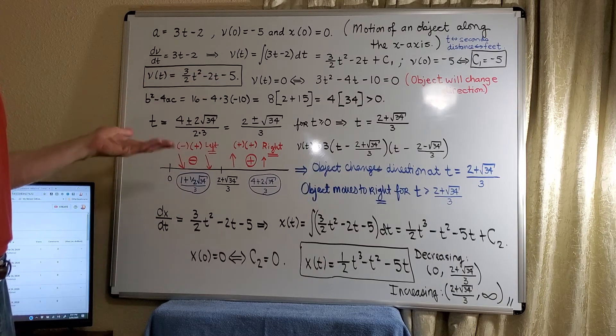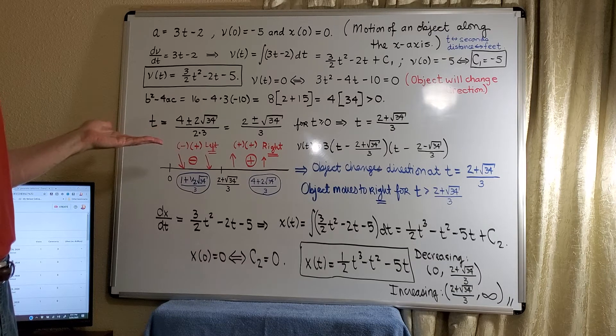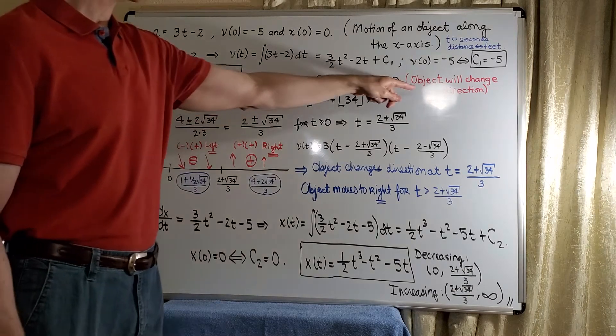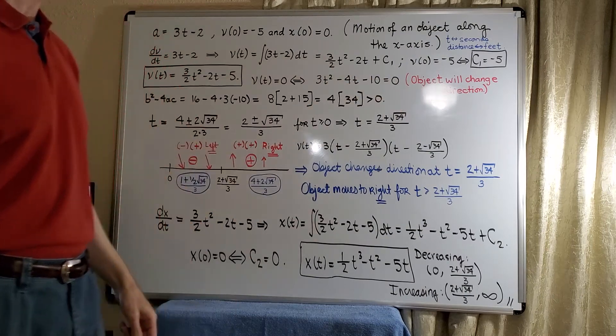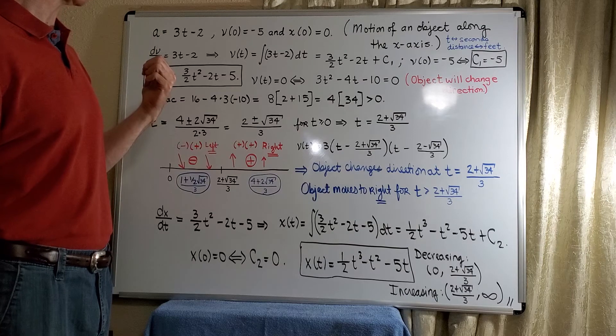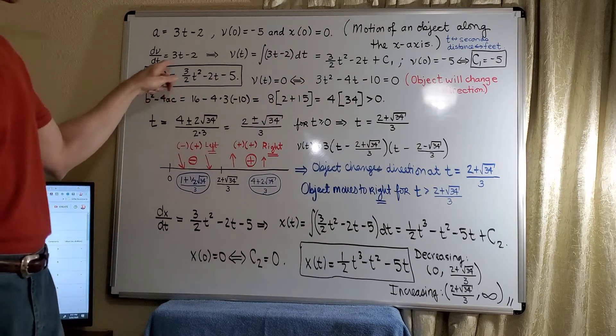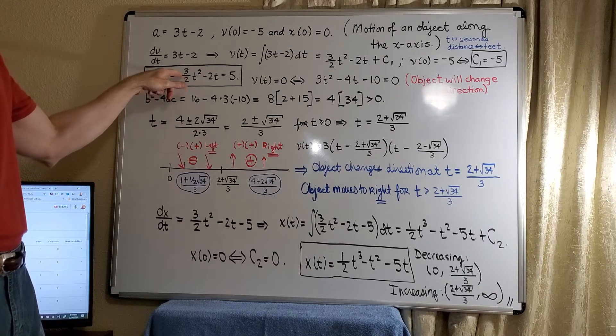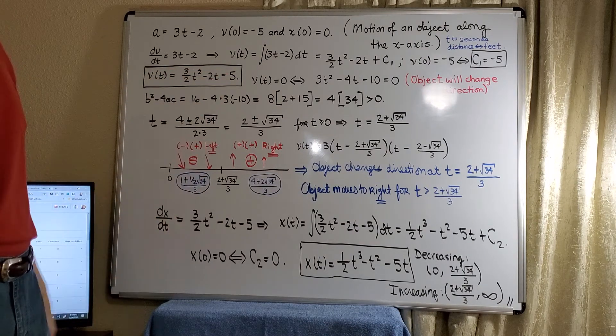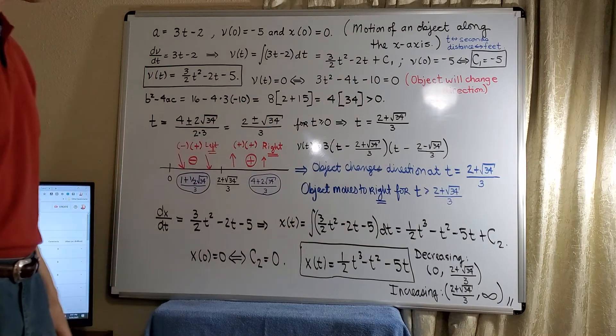Now what I want to do is go ahead and analyze the velocity function because what we can see here is that the object will change direction. So we just want to analyze for the zeros of the velocity. We'll use the quadratic formula. What I've done here is multiplied through by 2 to get 3t squared minus 4t minus 10.